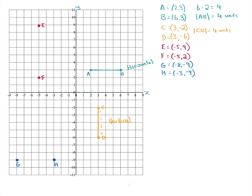When a line is straight across or straight up and down, we can find the distance using these two methods. For homework, figure out the distance between E and F, and the distance between G and H. It's not much homework since it's Friday and you've already done the starter questions. Take a photo and send it to me. Have a great weekend — well done on this week's work!